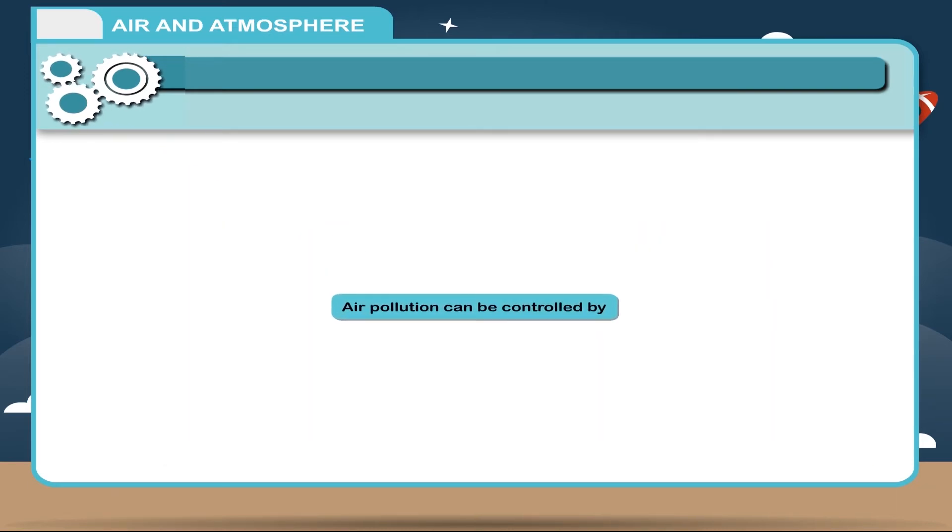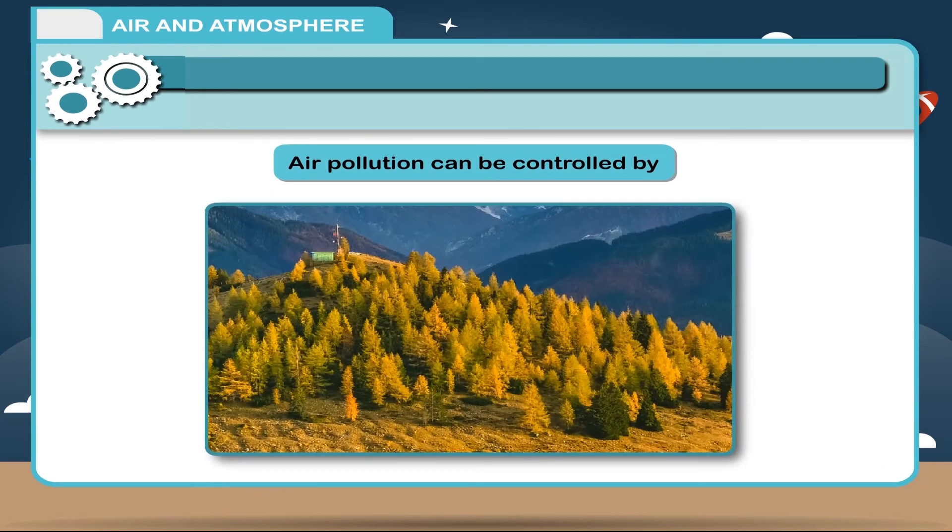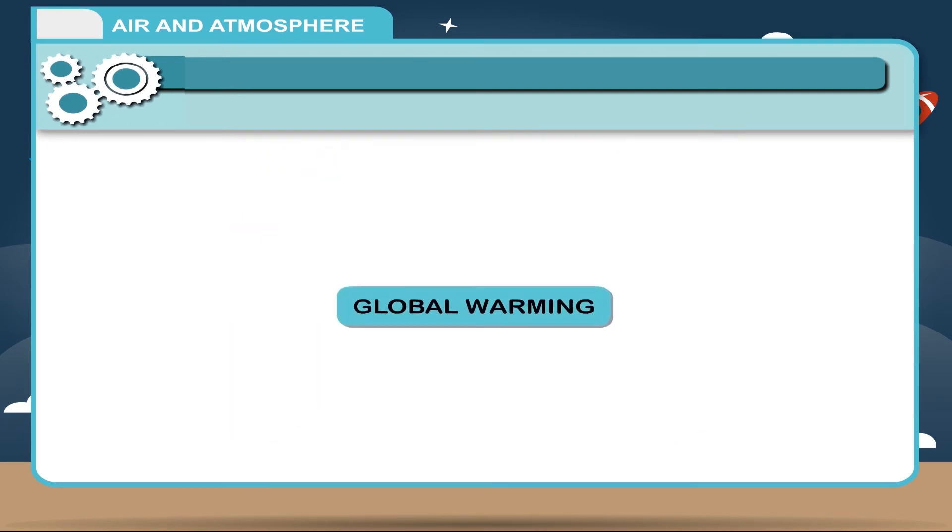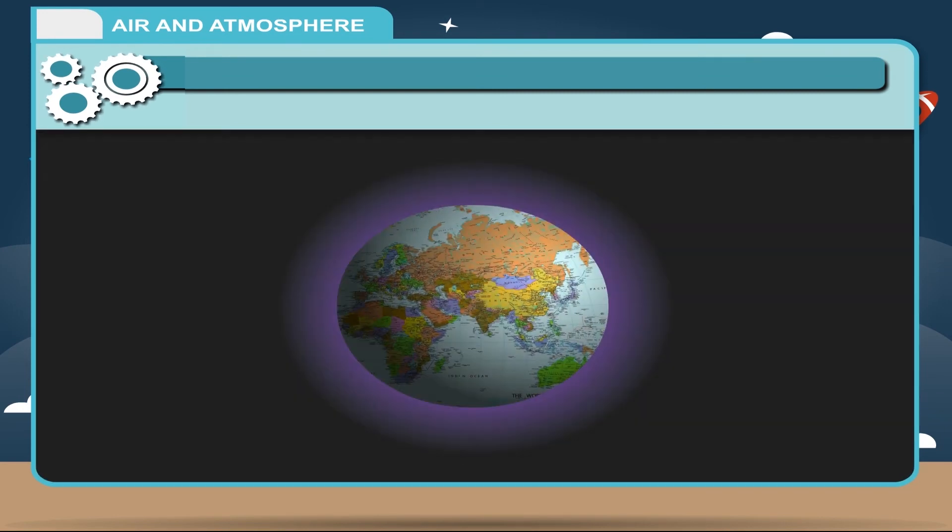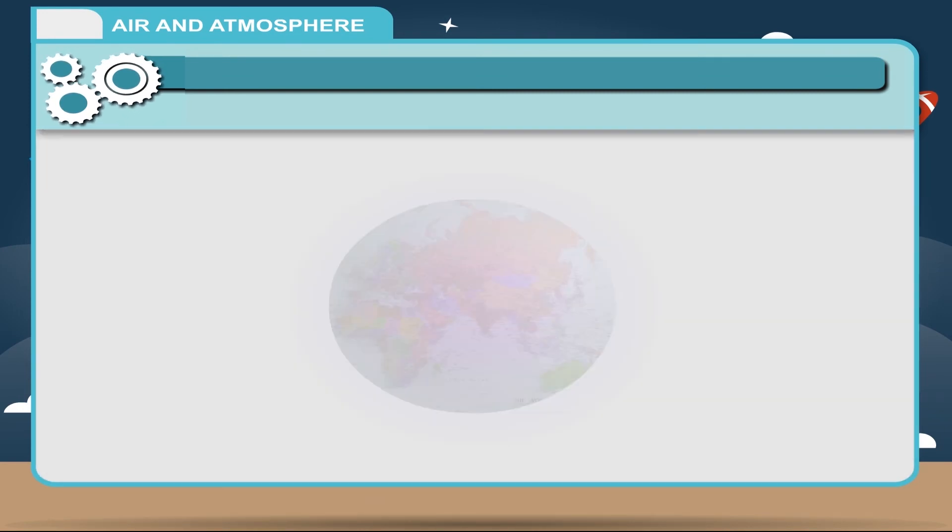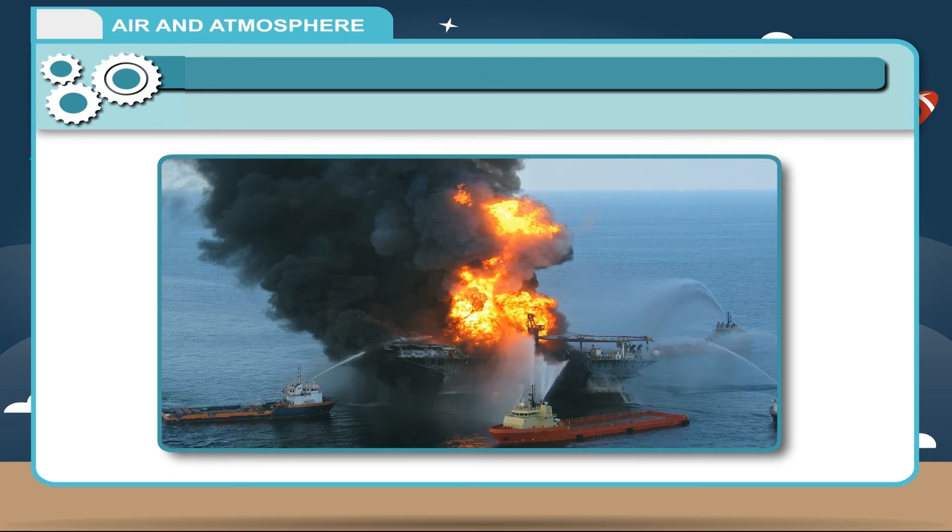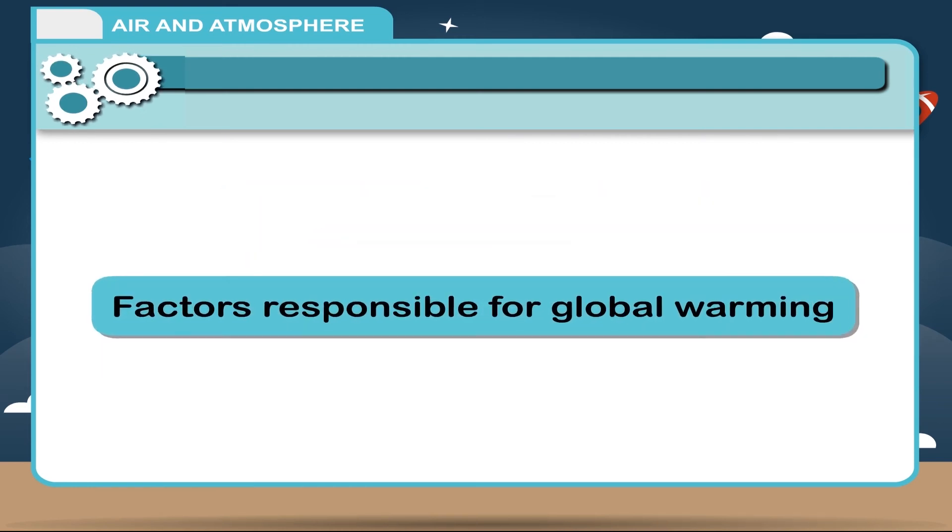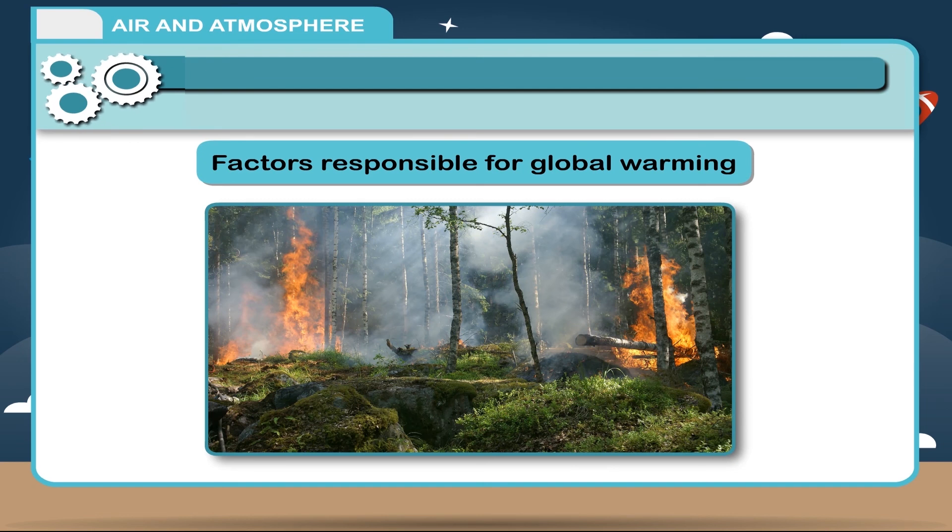Air pollution can be controlled by growing more trees and using eco-friendly methods. Global warming: the temperature of earth's atmosphere is increasing due to increased concentration of carbon dioxide. Deforestation and burning of fossil fuels increase carbon dioxide and methane concentrations.